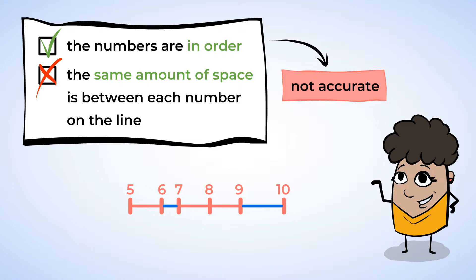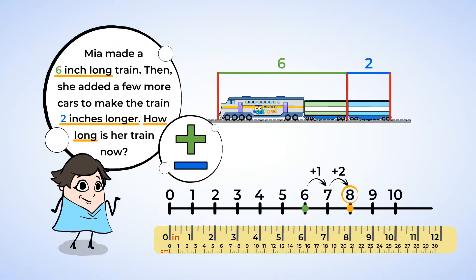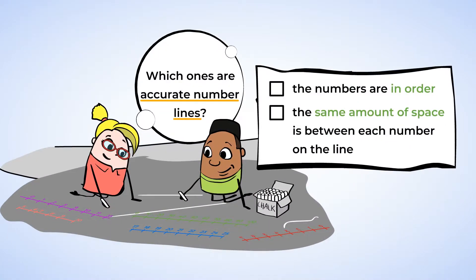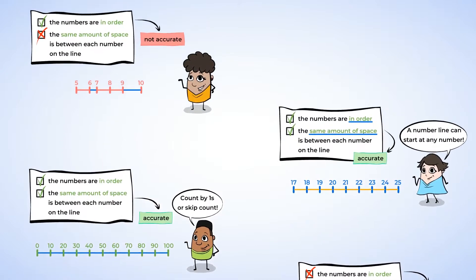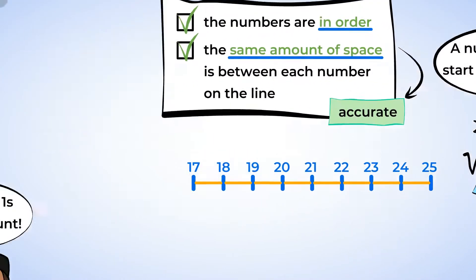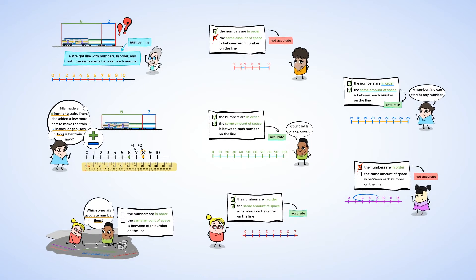That was quite a lot of work with number lines, but you nailed it. We learned that a ruler is just like a number line, and now we're able to draw number lines to help us add and subtract. You learned that a number line has two very important rules: the numbers must be in order, and there must be the same space between each mark on the number line. We also saw lots of different kinds of number lines and learned that they can start at any number, and you don't have to count by 1s on them. You can skip count. Now, great work today. Number lines are going to be a great tool. See you soon!